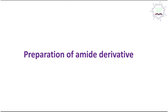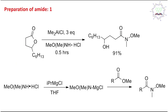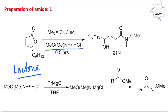Now the most important question: how is the Weinreb amide prepared? We will see many examples. The first example involves a lactone. Lactones are intramolecular or cyclic esters. In this context the hydroxylamine hydrochloride salt is used along with trimethylaluminium chloride (Me₂AlCl). This reagent plays two roles.